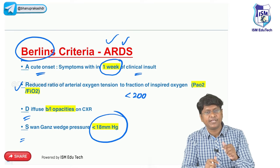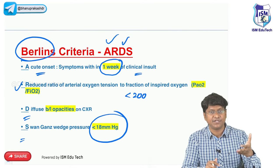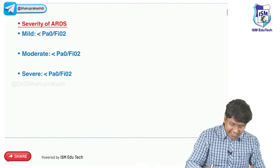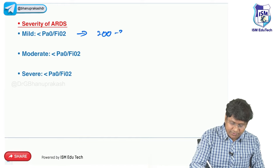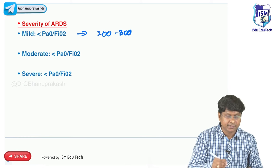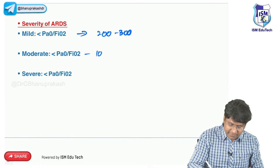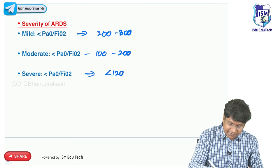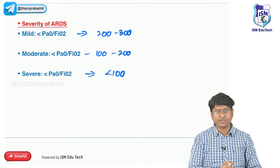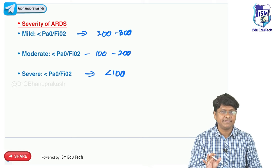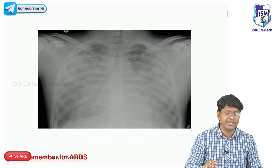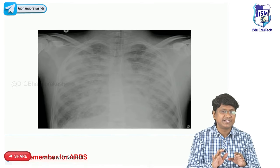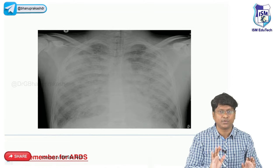Depending on the PaO2/FiO2 value, we assess the severity of ARDS. In mild ARDS, PaO2/FiO2 is 200 to 300. In moderate ARDS, it is 100 to 200. In severe ARDS, it is less than 100 mmHg. The chest X-ray in ARDS patients shows diffuse bilateral opacities, described as complete white-out lung.